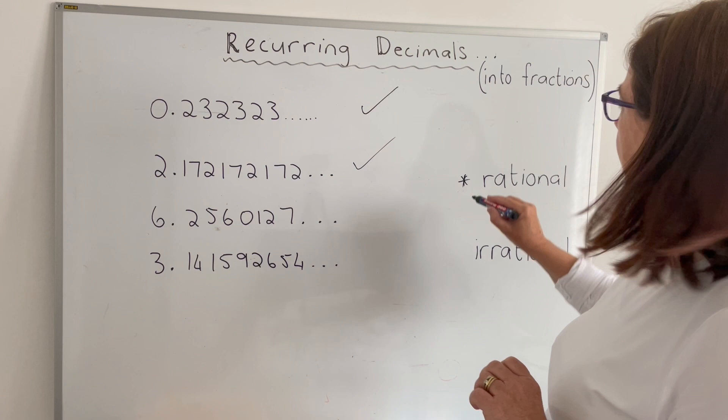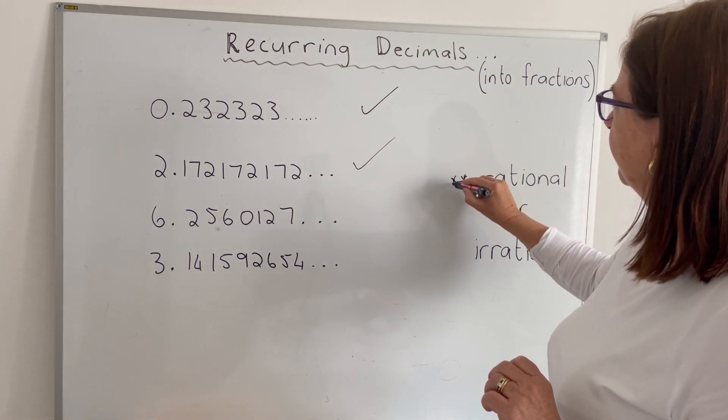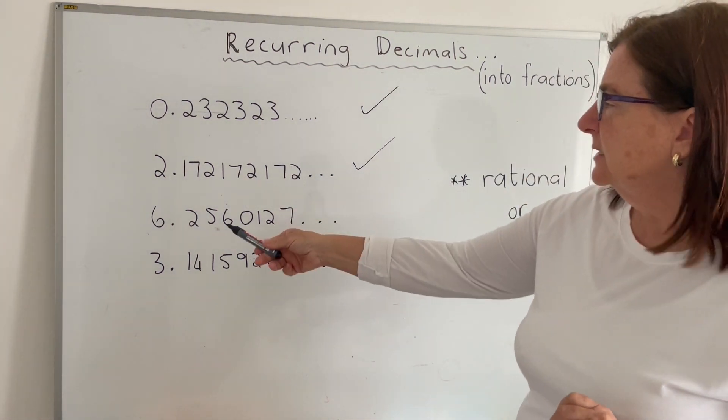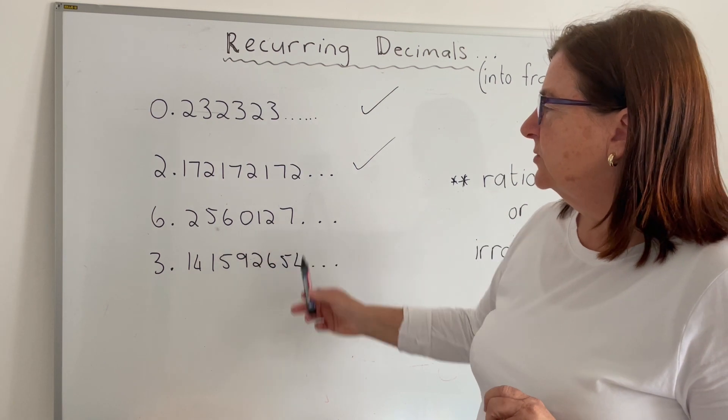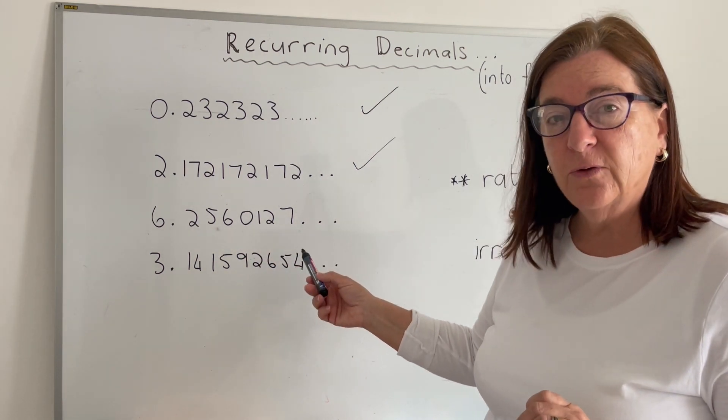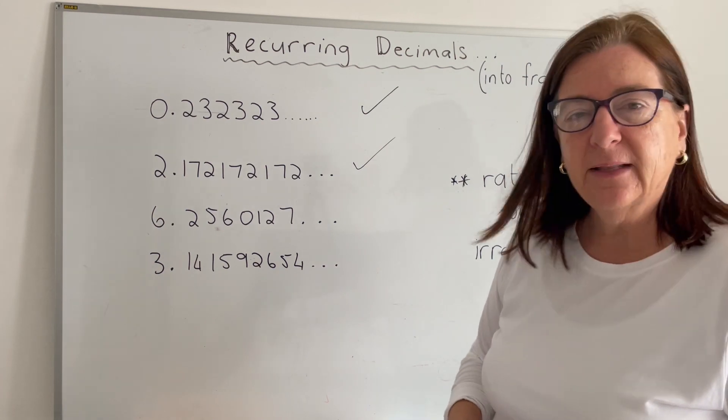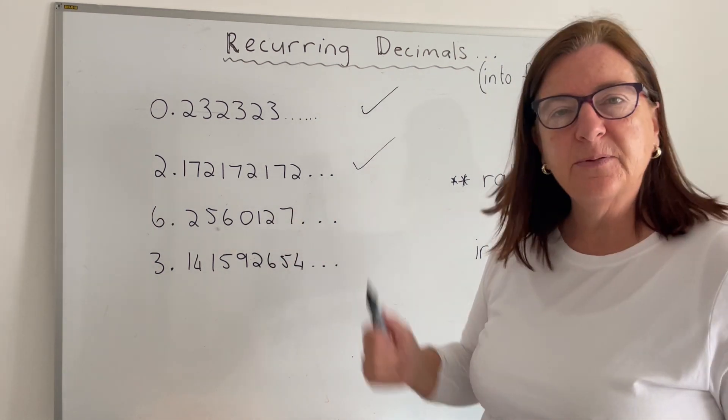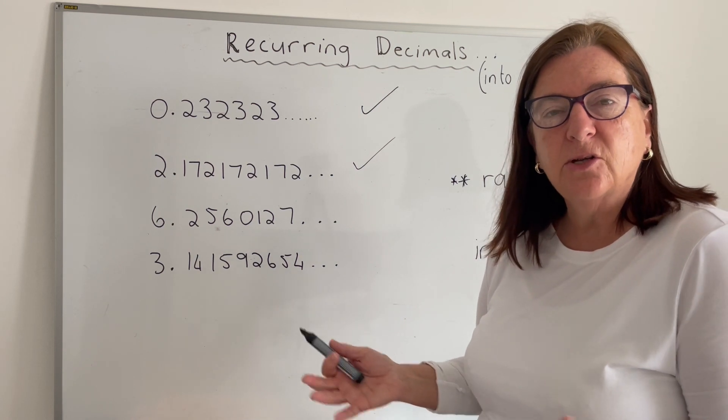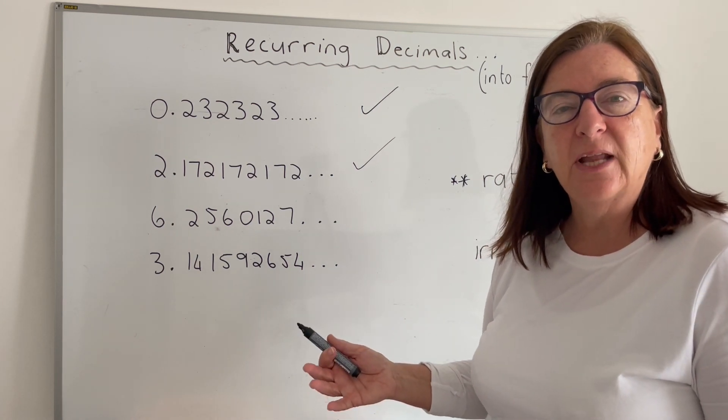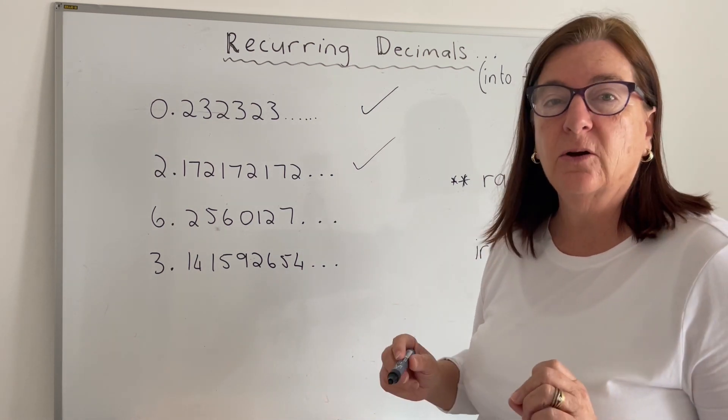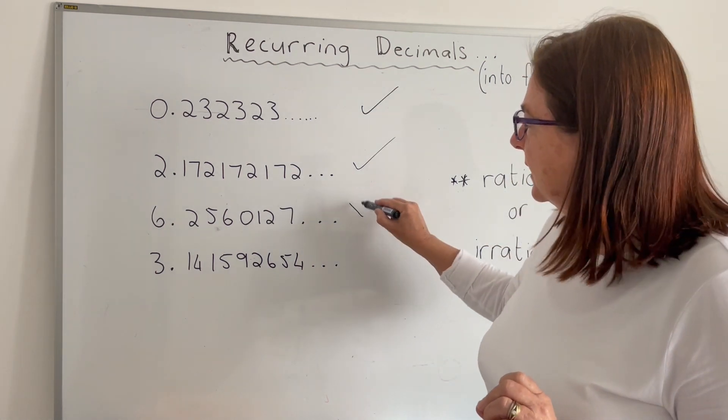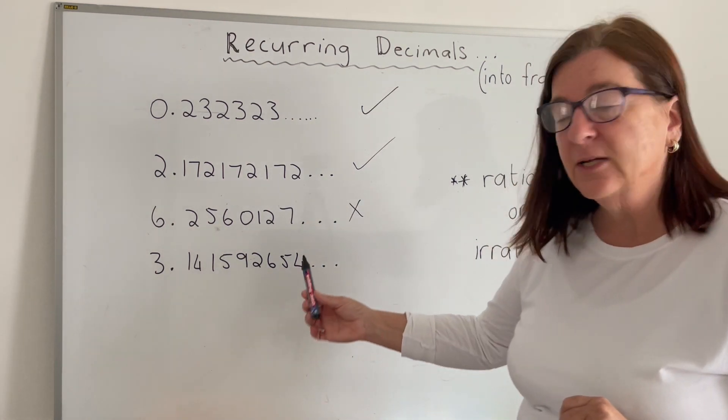Third one, 6.2560127. Now if I look at that carefully, there's no pattern in that. It keeps on going, keeps on going, but there's no repetition happening. So that cannot be converted into a fraction and that would therefore be an irrational number.